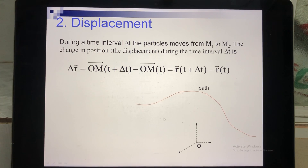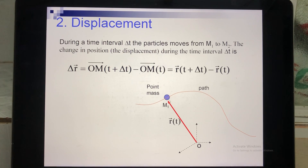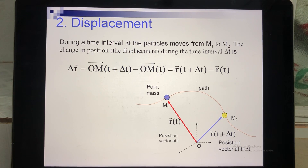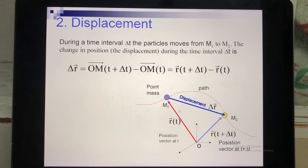Now we talk about displacement. Suppose I have a coordinate system and a path. At the initial moment, the particle is at position M1, and we draw the position vector for that moment. After a while, the particle moves to a second position M2, and we draw the position vector for M2 — starting from the origin and drawing a line to M2. To calculate the displacement, we take the final position vector minus the initial position vector.